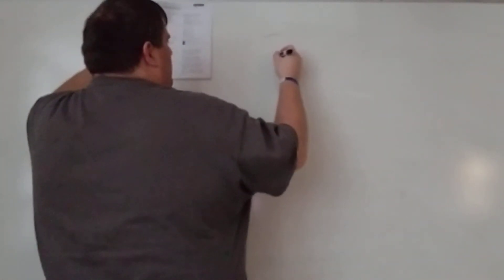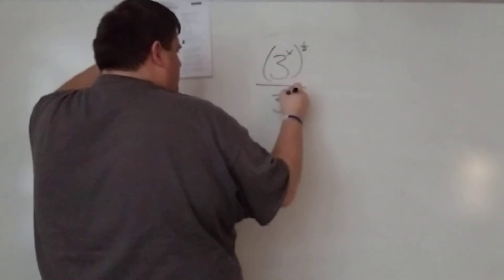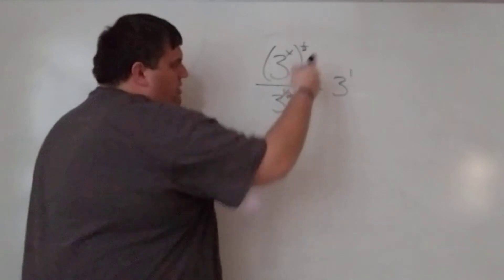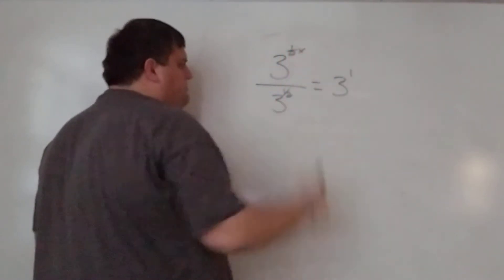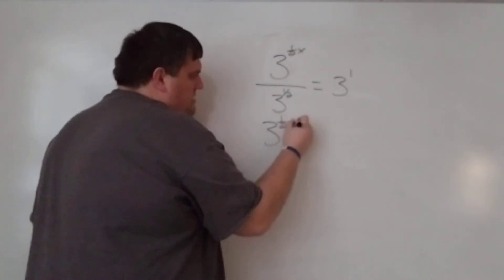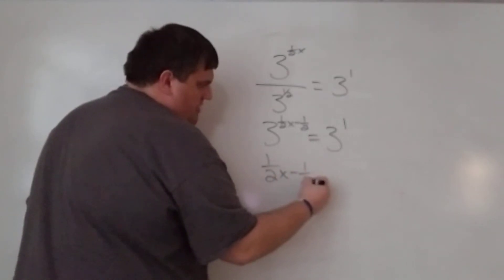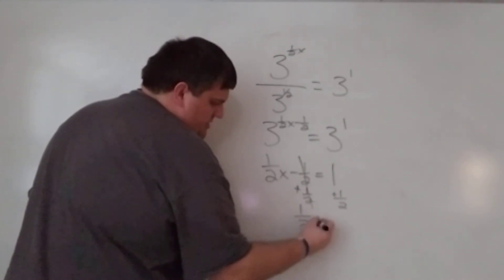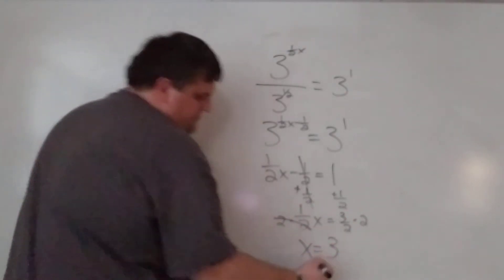Number five: they already give you a power to a power, so one-half times x is just one-half x. When you divide numbers with the same base, you subtract exponents, giving three to the one-half x minus one-half. Drop the base: one-half x minus one-half equals one. Add one-half to both sides to get three-halves, then multiply by two, and x equals three.